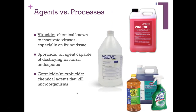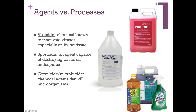A sporicide is an agent capable of destroying bacterial endospores using very strong chemicals — it is also a sterilant because it destroys the most resistant microbes. A germicide or microbicide is a general umbrella term for chemical agents that kill microorganisms; common examples include Pine-Sol, Lysol, and Clorox.